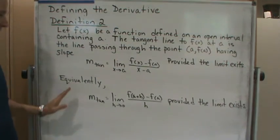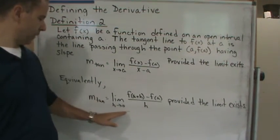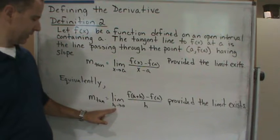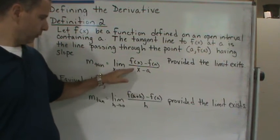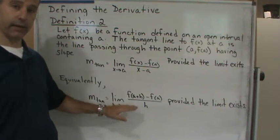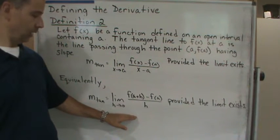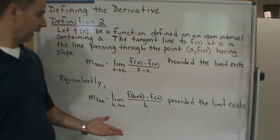Also, equivalently, we can define the slope this way as the limit as h approaches zero of this difference quotient. So again, we're providing two different ways of getting the slope of the tangent line. They're equivalent.